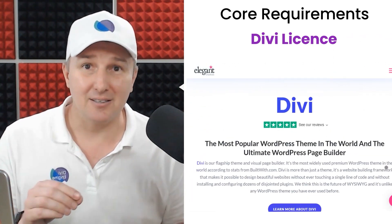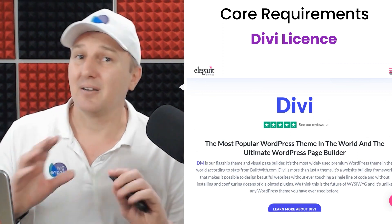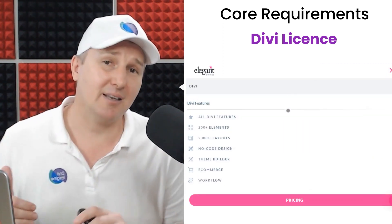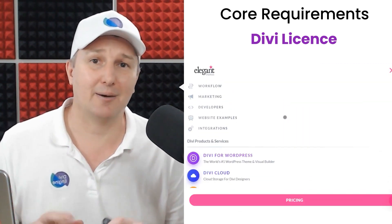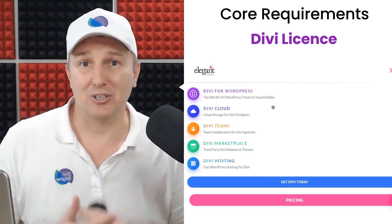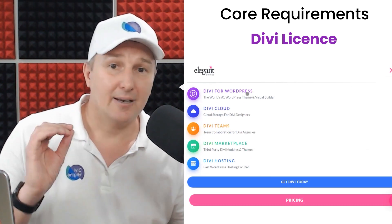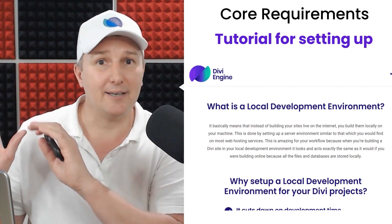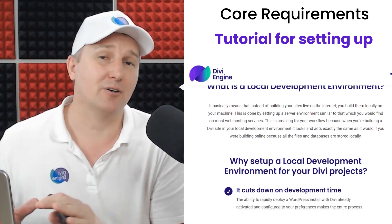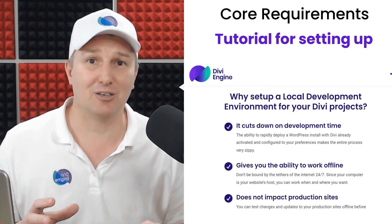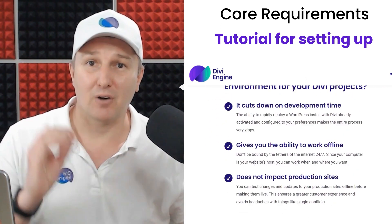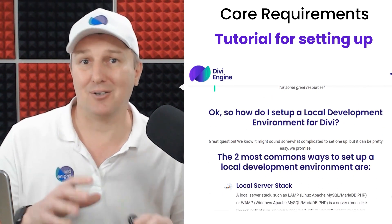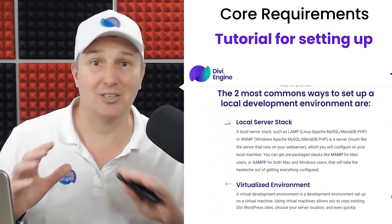You'll need a Divi license. If you don't have one yet, we will definitely provide you with an affiliate link where you can go ahead and purchase Divi for use in this course. We'll also be linking an article in the course notes that you can follow along to set up on a local machine, in case you don't have a web host yet.